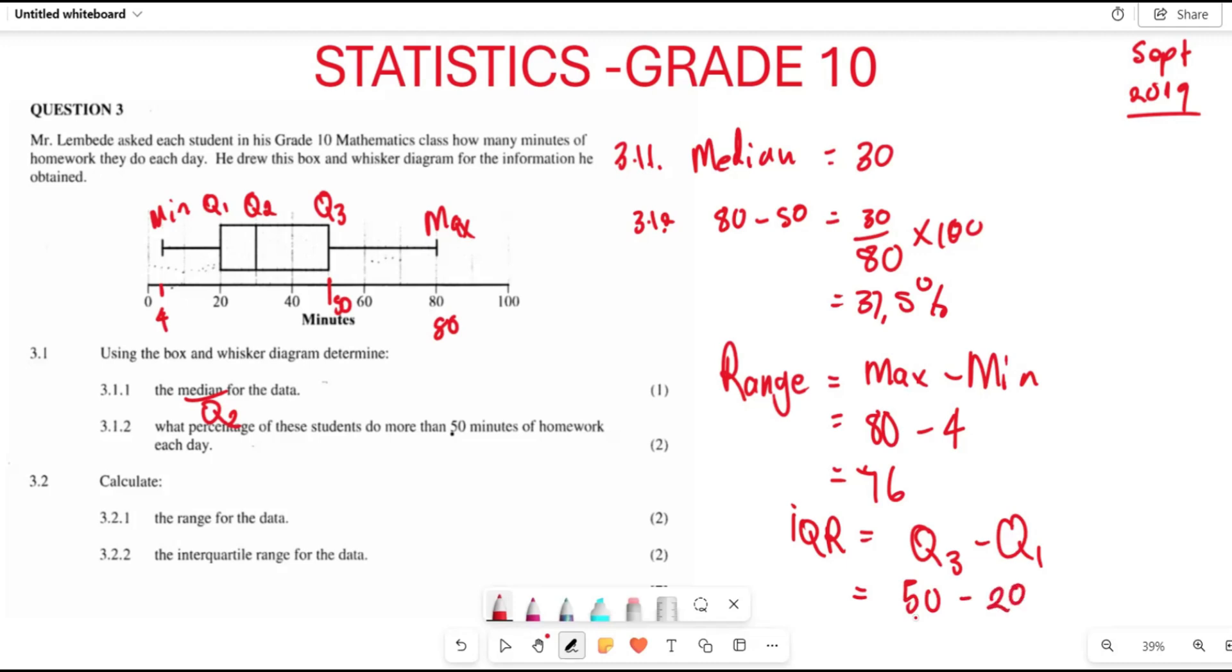So your interquartile range for this particular question is 50 minus 20, which equals 30.